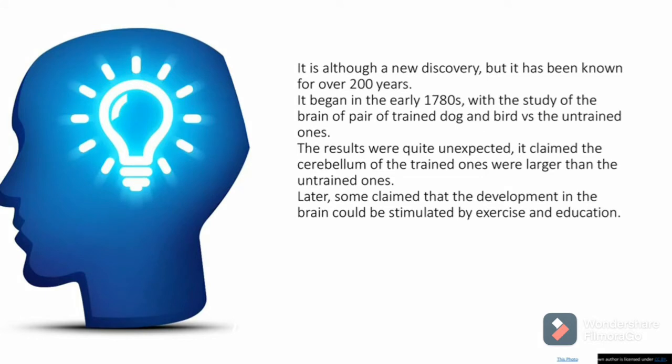It began in early 1780s where a researcher took a pair of dogs and a pair of birds from which he trained one of them. Then he studied the brain of the pair of trained dog and bird versus the untrained ones.